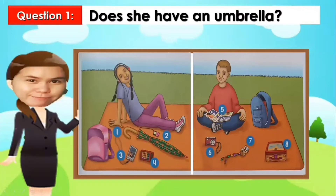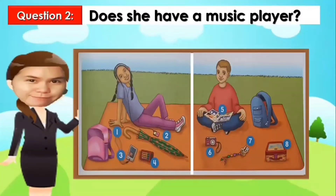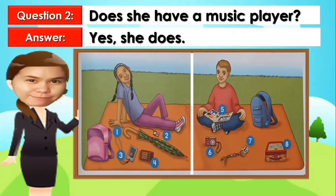By looking at the pictures, we are going to answer the following questions. Question number one: Does she have an umbrella? The answer is yes, she does. Next, does she have a music player? The answer is yes, she does.